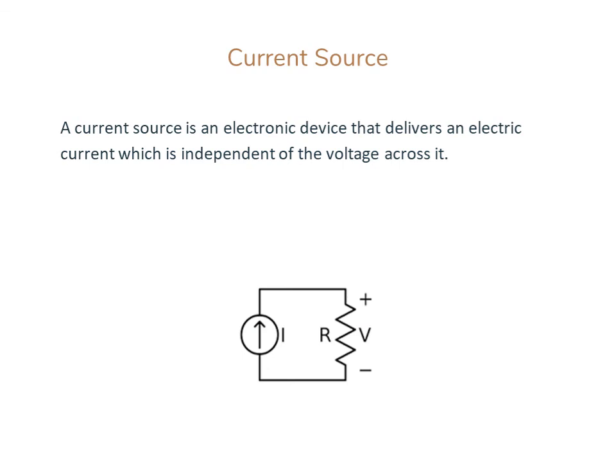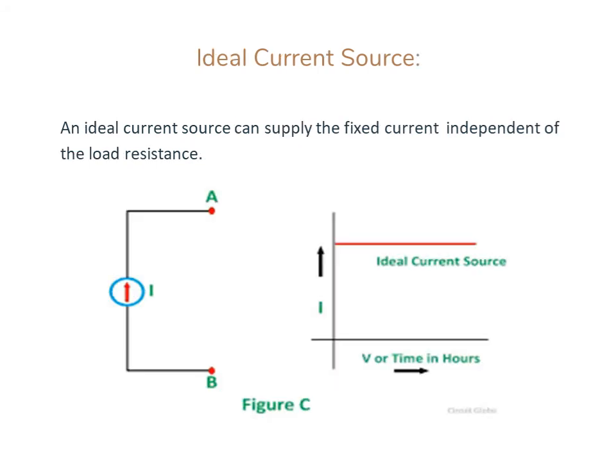Current Source: A current source is a device that delivers an electric current which is independent of the voltage across it. Ideal Current Source: An ideal current source can supply a fixed current to the circuit, independent of the load resistance.